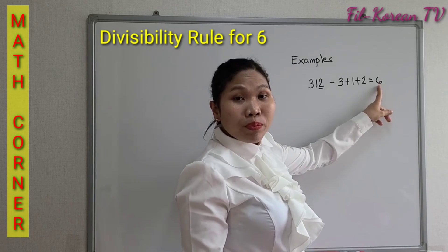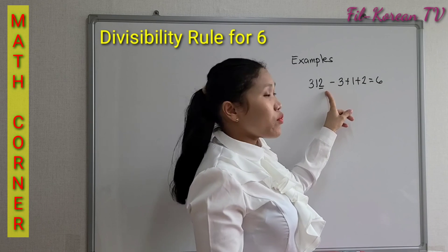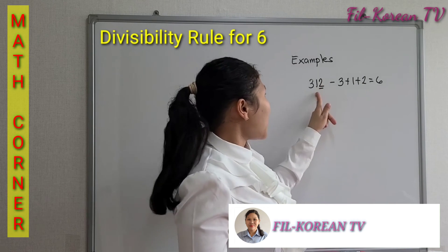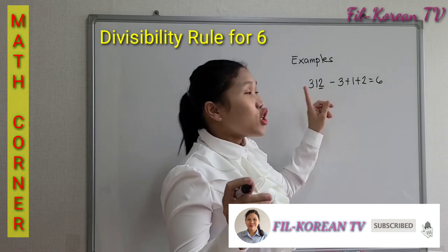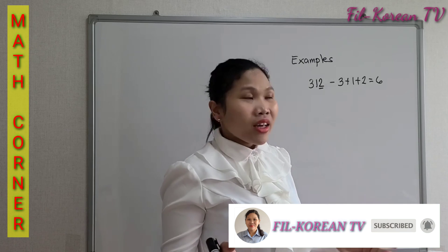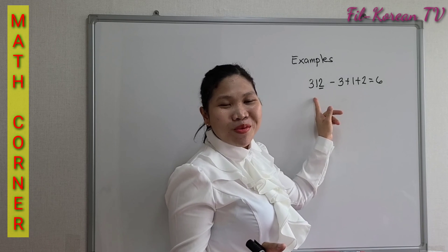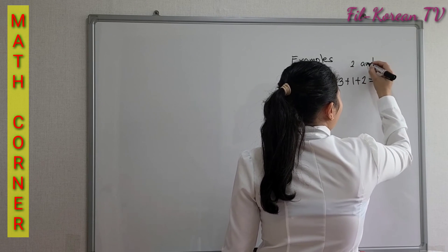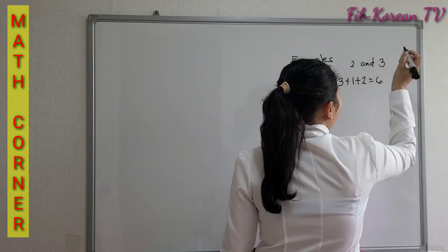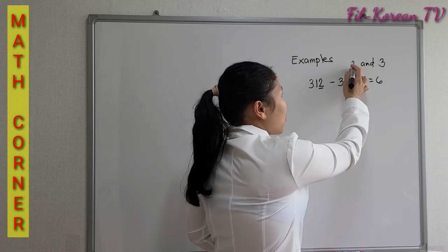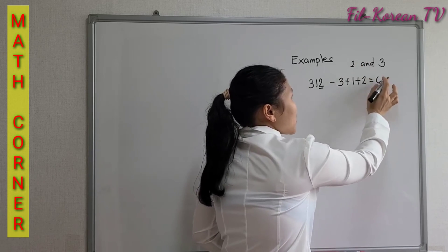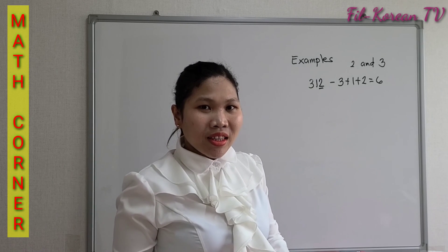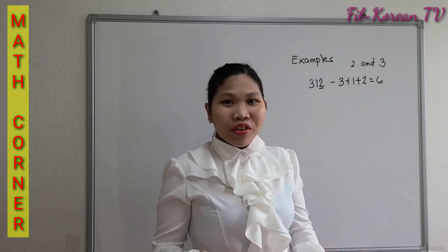6 is a multiple of 3, therefore 312 is divisible by 3. And since this number is divisible by both 2 and 3, this number is divisible by 6. The two conditions must both be present.